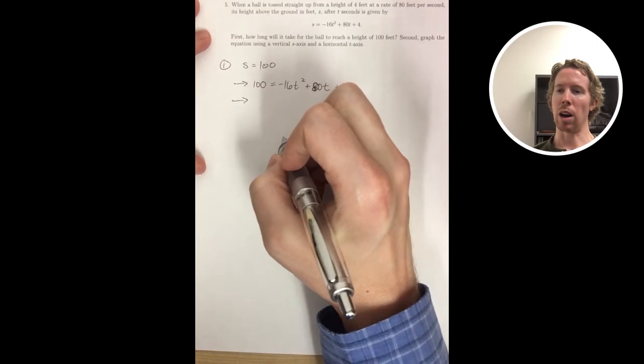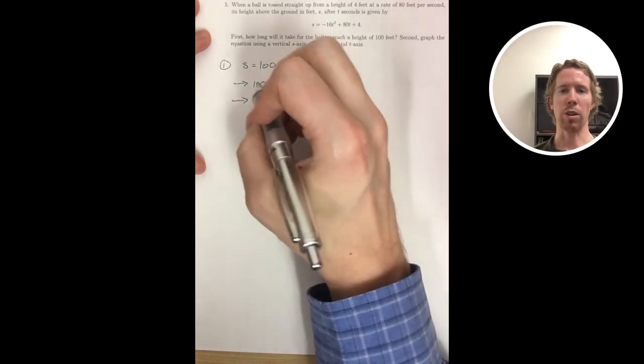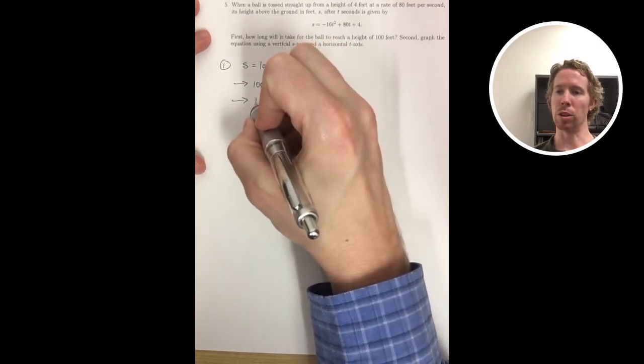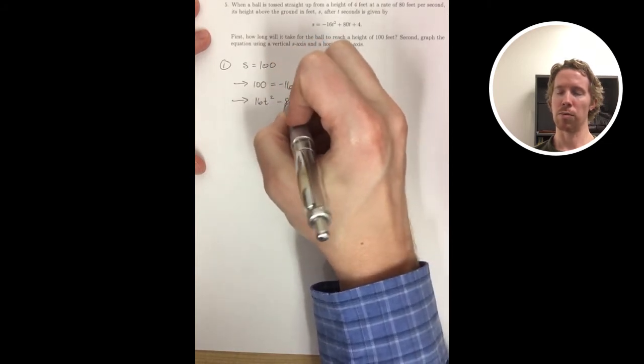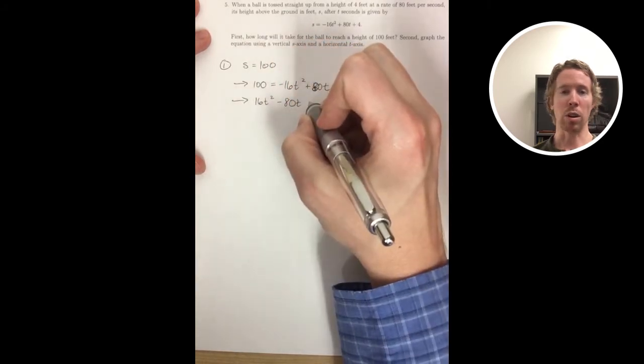We're asked to find how long it will take the ball to reach a height of 100 feet. So you just set the height s equal to 100 in the equation, and then you want to solve for t.